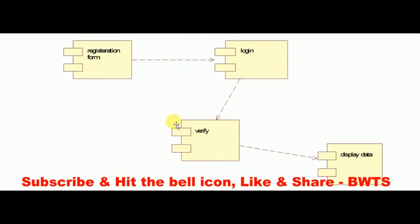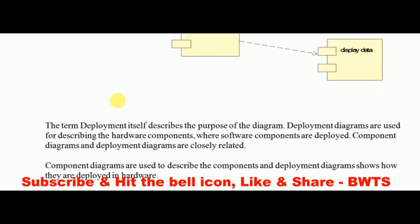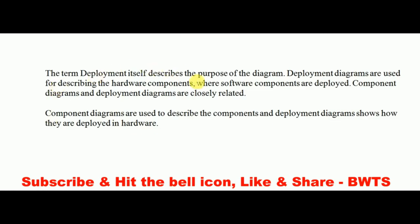In this component diagram example, first is the registration form. Once you fill the registration form, you can log in. After logging in, a verification process runs in the background. Once verification is successful and login credentials match, it displays the data. These four are different components, and since we use a set of components, it is called a component diagram.